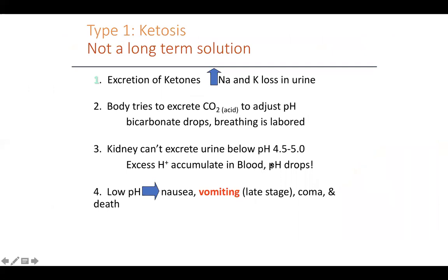As the blood becomes acidic, the body needs to balance acid-base balance. To do so, it needs to get rid of the ketones. With the excretion of the ketones, sodium and potassium are also lost in the urine, because sodium follows water and you need a lot of water to excrete these ketones. The blood is still very acidic because the amount of ketones produced in diabetic ketoacidosis is so high that the body goes to another mechanism — excreting CO2 via our breath.